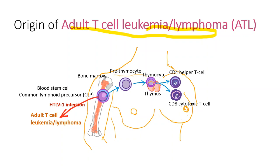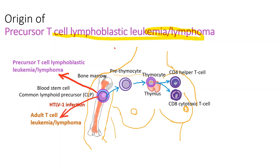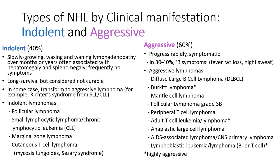Adult T cell leukemia lymphoma is caused by HTLV-1 infection and originates from common lymphoid precursor cells. T cell lymphoblastic leukemia lymphoma is a very aggressive lymphoma arising from the blood stem cell or common lymphoid precursor cells.